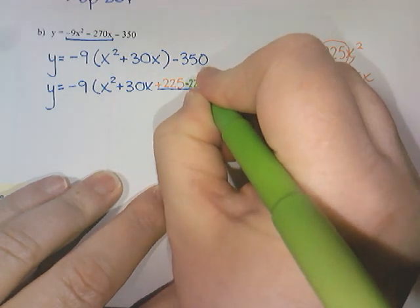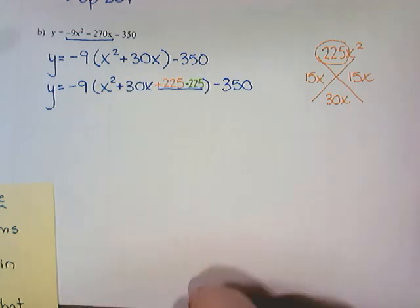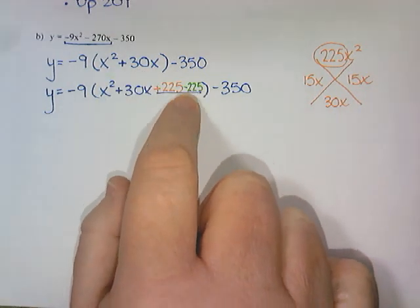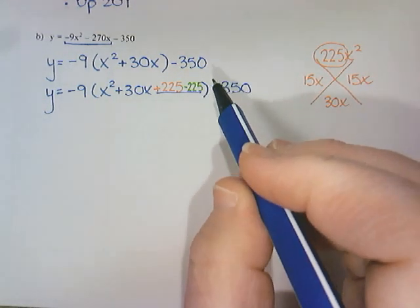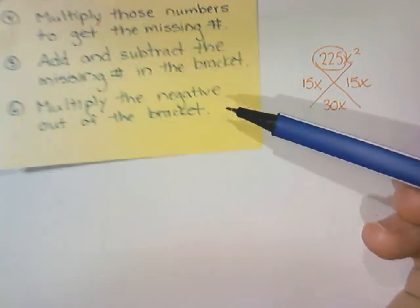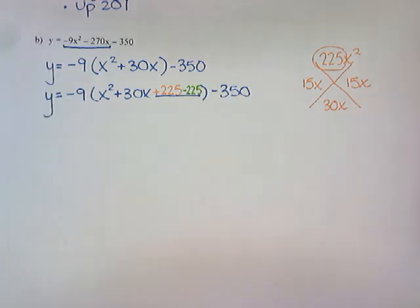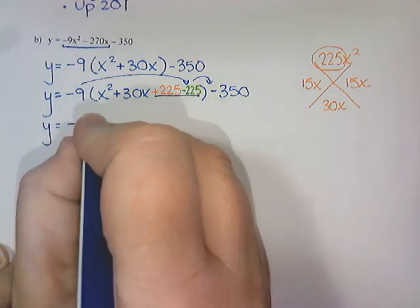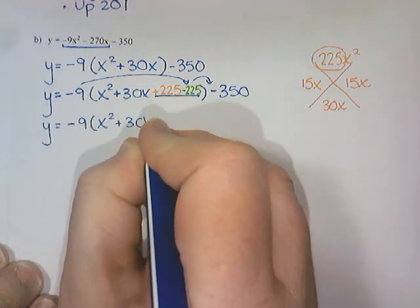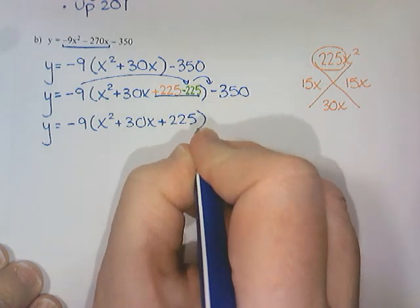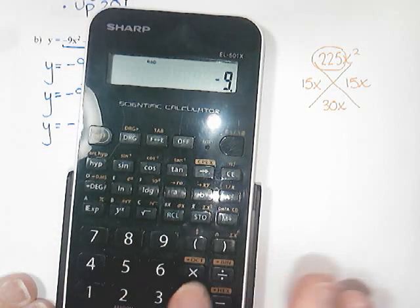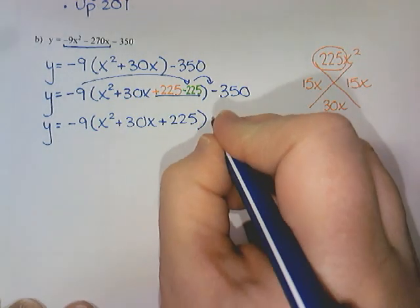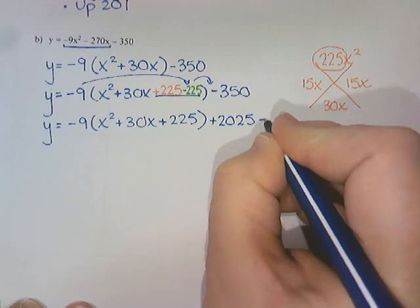Now if I were to do 225 minus 225, I just end up back up here. So I want to get rid of that negative 225. I don't want it in the bracket anymore. We're going to multiply the negative out of the bracket. This is going to be negative 9 times x squared plus 30x plus 225. And then I'm going to do negative 9 times negative 225 to get 2,025. We're still subtracting 350.